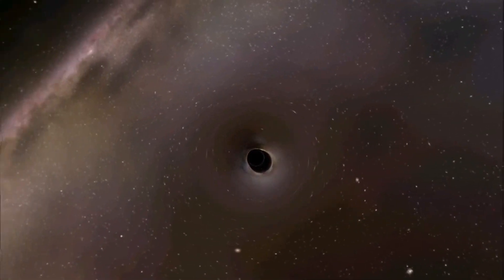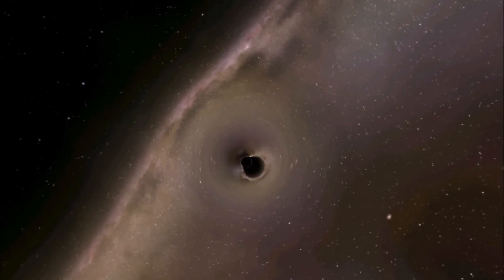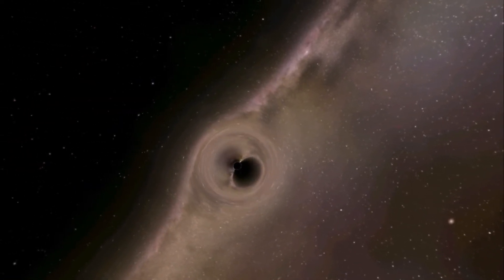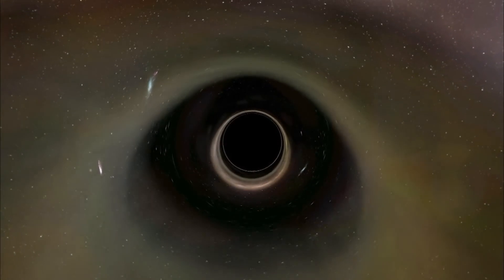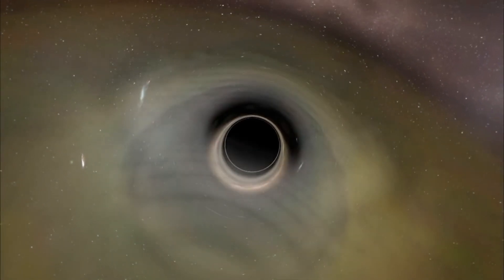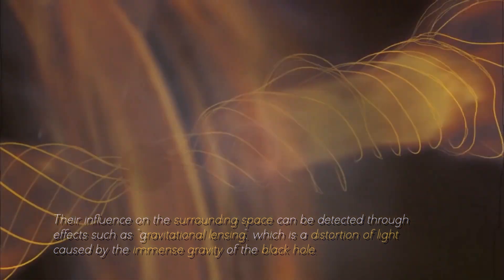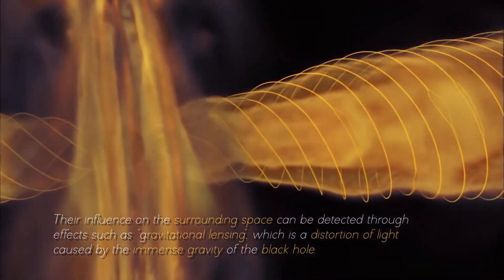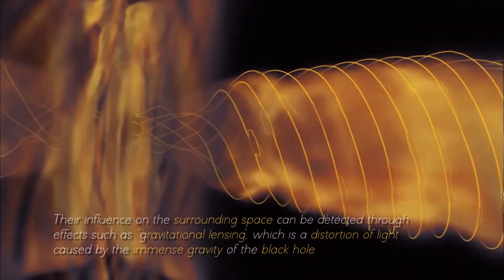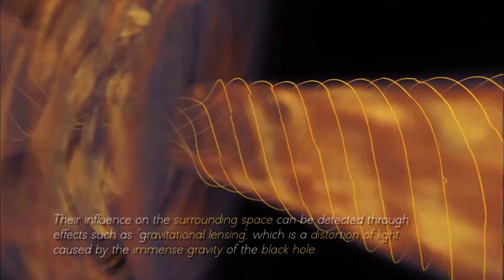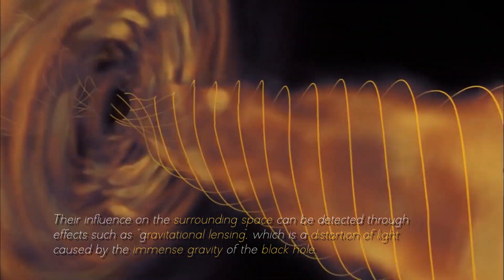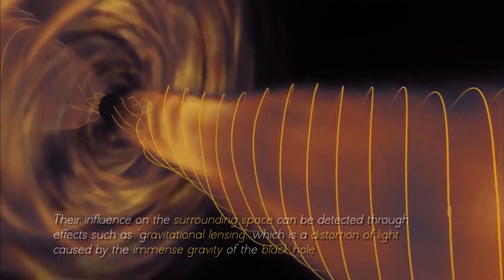The presence of an event horizon around black holes is what makes their direct study difficult, but this does not mean that it is completely impossible. Their influence on the surrounding space can be detected through effects such as gravitational lensing, which is a distortion of light caused by the immense gravity of the black hole.